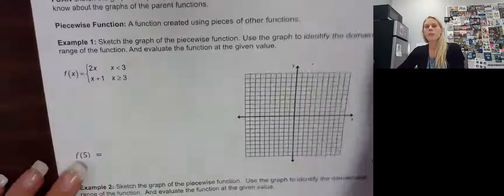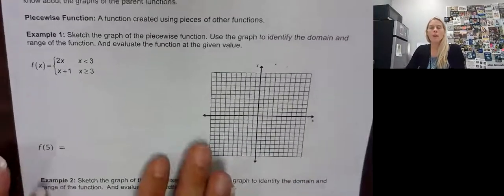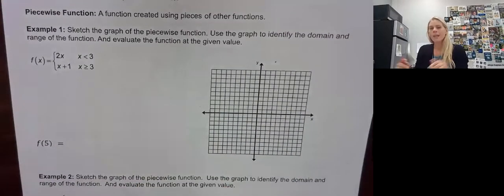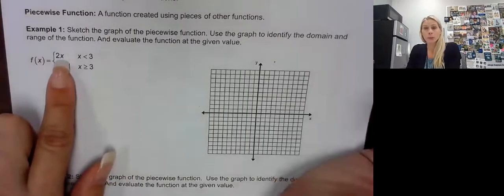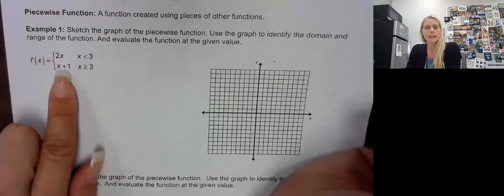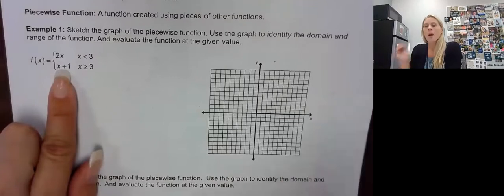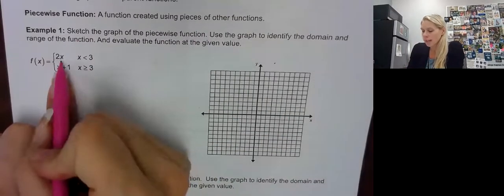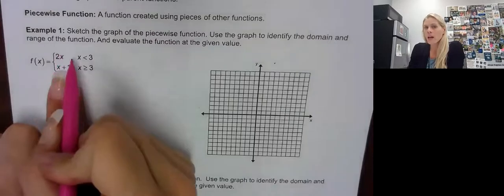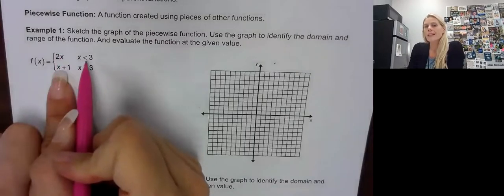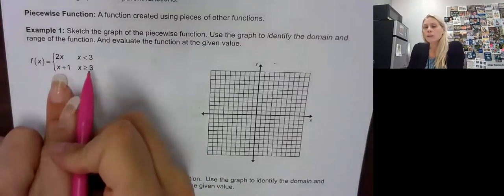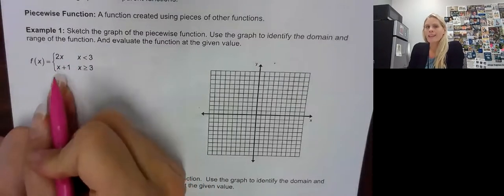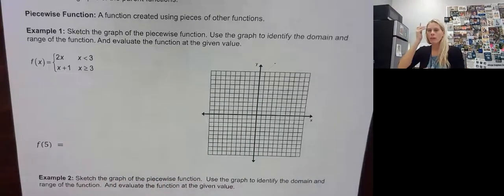Sometimes we can picture it, but it's better to put it all together. Here's how our function is going to be given to us. We're going to look at our pieces. Here I have a 2x, which is linear, and an x plus one, which is also linear. The specific thing is the 2x line — I only want it where x is less than three. Where x equals three and is greater than three, that's where we want our x plus one.